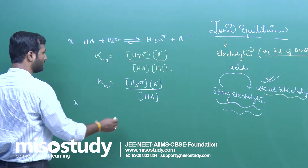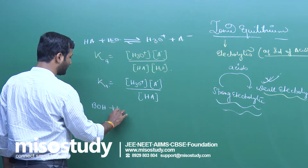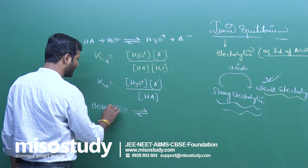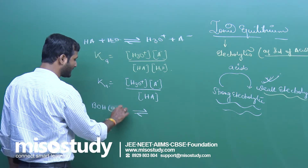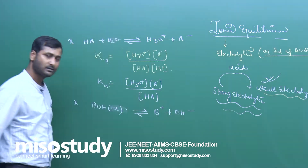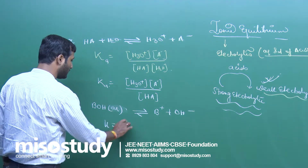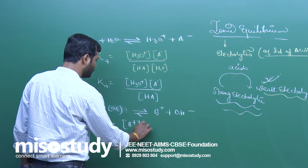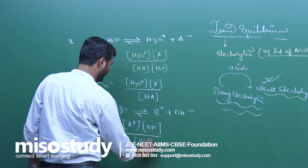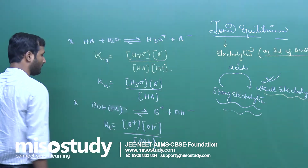Similarly, in case of base — we have B O H plus H₂O — that means hydroxyl ion. You can write B O H aqueous, which gives B⁺ and O H⁻ completely. Now in this case, K will be equal to B⁺ times O H⁻ upon B O H — this is the base, so we will put here K B.